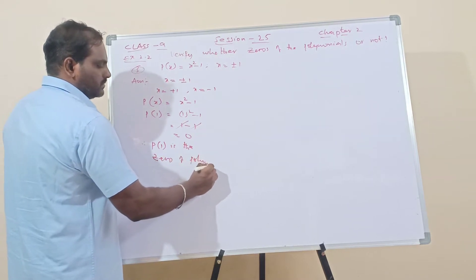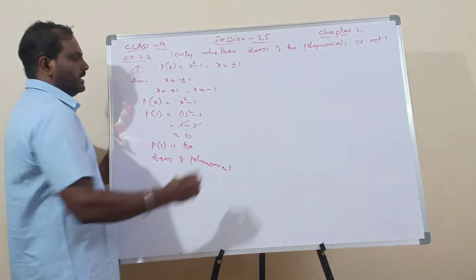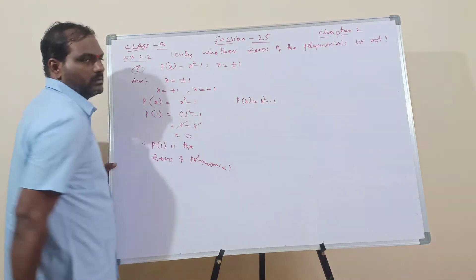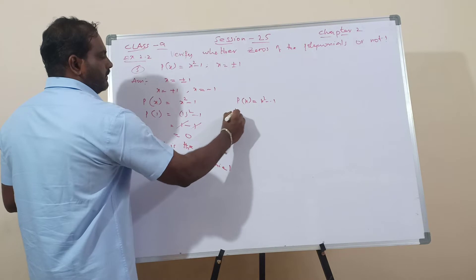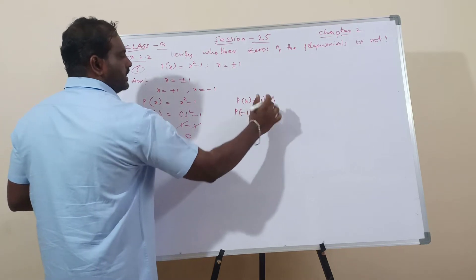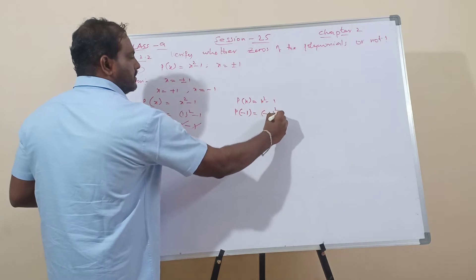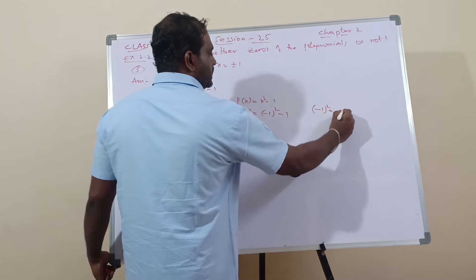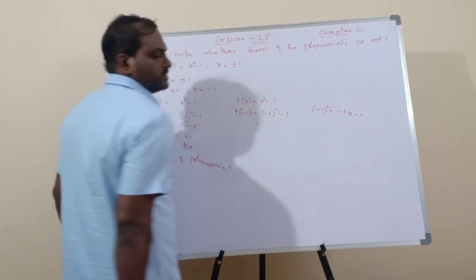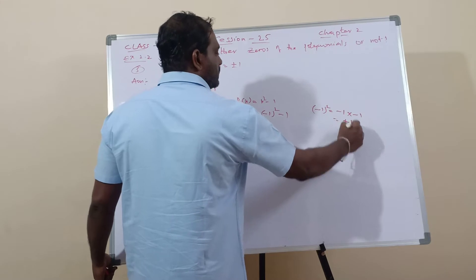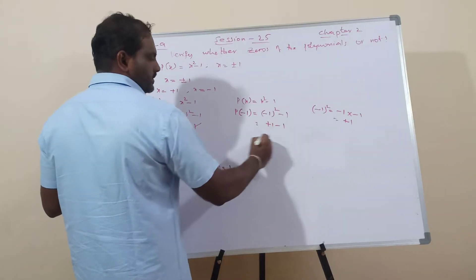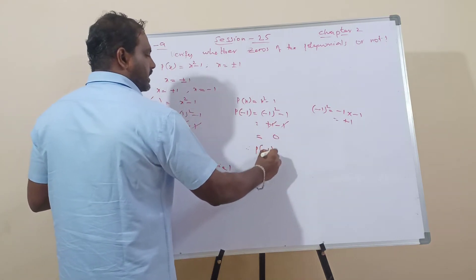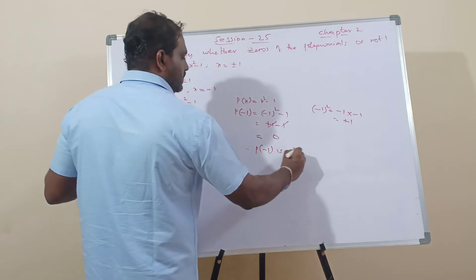Next, the second one. P of x equals x squared minus 1. Now I check p of minus 1: that is minus 1 whole squared minus 1. Minus 1 whole squared means minus 1 into minus 1, which is plus 1. So we get plus 1 minus 1, which is 0. Therefore p of minus 1 is the zero of the polynomial.